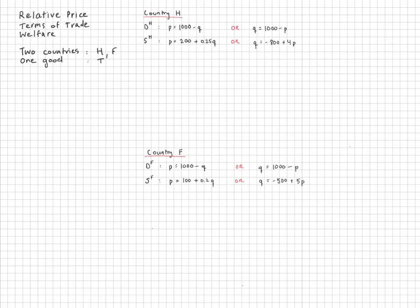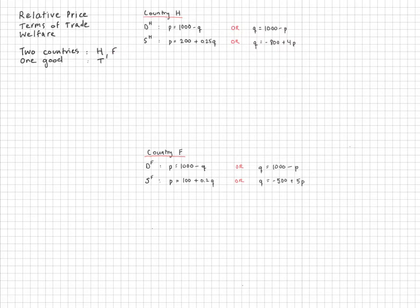In this video I want to talk about the main reasons for international trade, which is a difference in relative price. We will look at how these relative price differences occur, then allow for international trade at some appropriate terms of trade, and look at the welfare implications. The setup is that we have two countries, country H and country F, producing one good — say good T, like tablets — and their differences give us a reason for international trade.